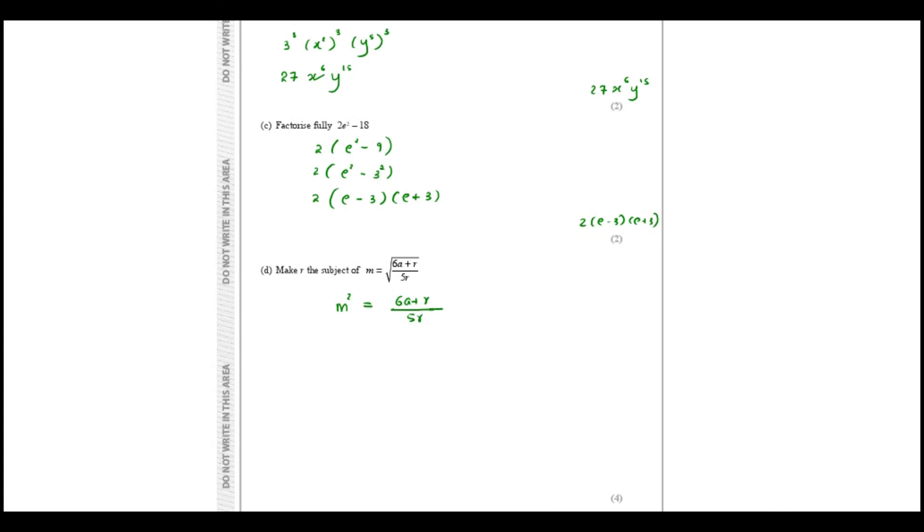Now I need to make r the subject, and r is there in two places, so I need to make all the r's come to one side. First I'll take 5r over, so I'm going to multiply m square with 5r. 5r m square equals 6a plus r. Now I'm going to take the plus r term to this side, so 5r m square minus r equals 6a.